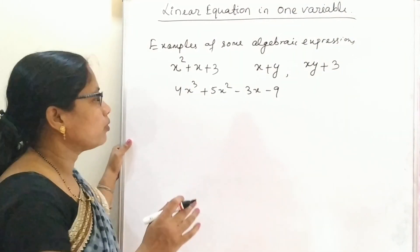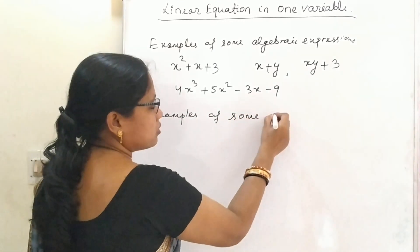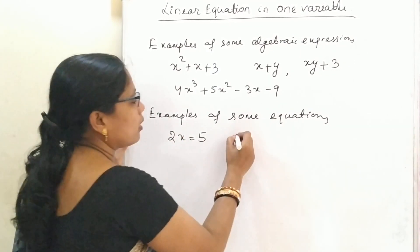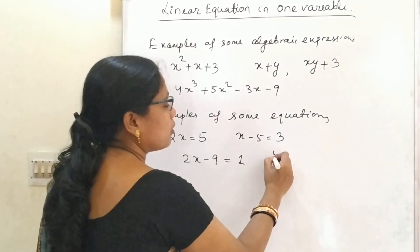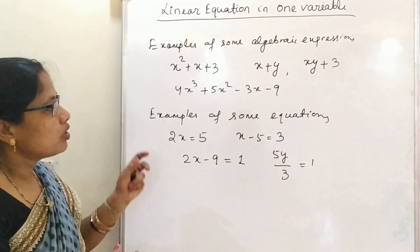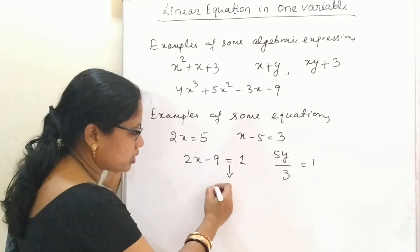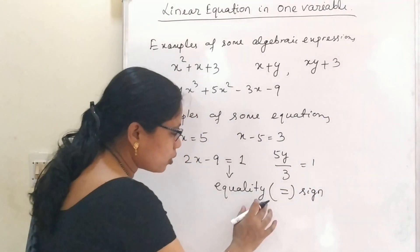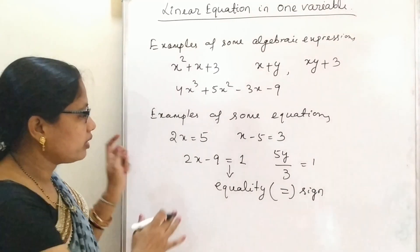Some simple equations you already know. Examples of some equations you have learned: 2x is equal to 5, x minus 5 is equal to 3, 2x minus 9 is equal to 1, and 5y minus 3 is equal to 1. In equations there is an equality sign, which is missing in algebraic expressions.